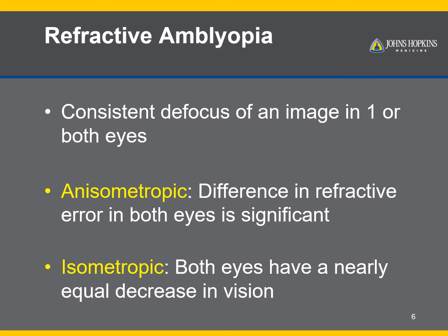Refractive amblyopia occurs when there is significant refractive error in one or both eyes, resulting in an unfocused and unclear image on the retina. There are two main types. Anisometropic amblyopia is more common and occurs when the two eyes have significantly different refractive errors, such that the image in one eye is not focused on the retina at the same time as the other eye. The less clear image is ignored by the brain and that eye becomes amblyopic.